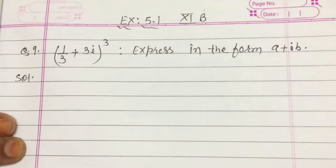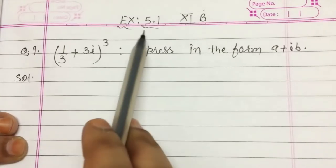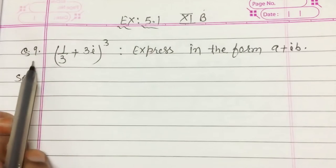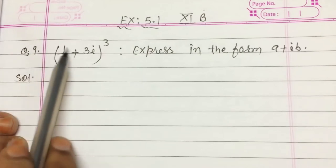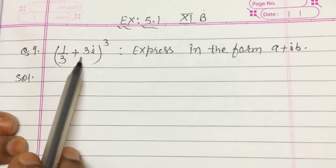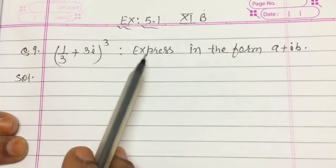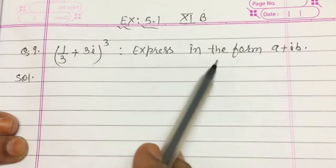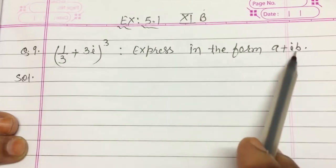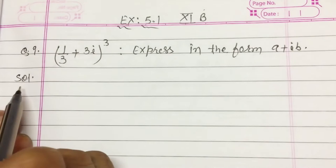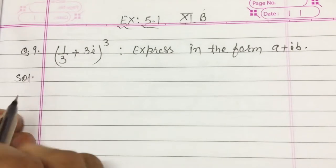Good morning students. Let's continue exercise 5.1, question number 9. It is (1/3 + 3i) whole cube, expressed in the form a plus ib. Start solution.